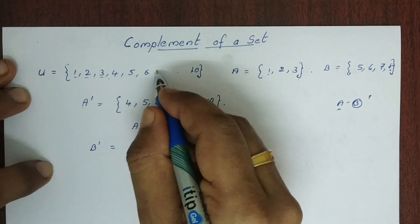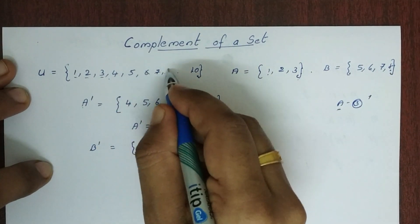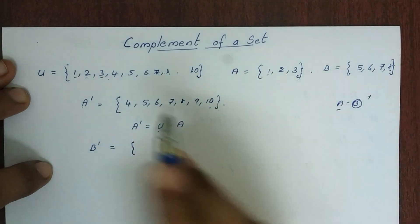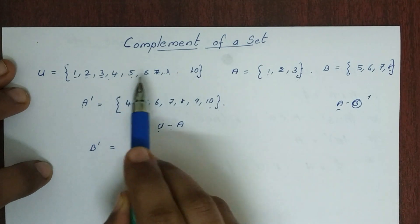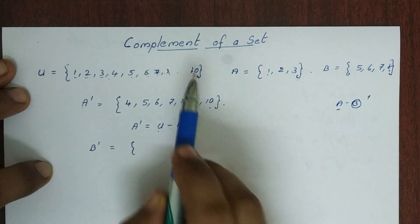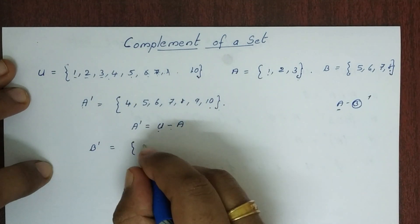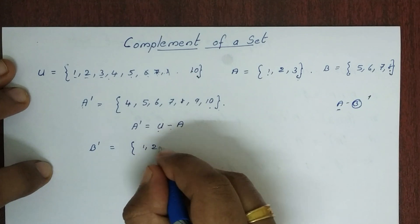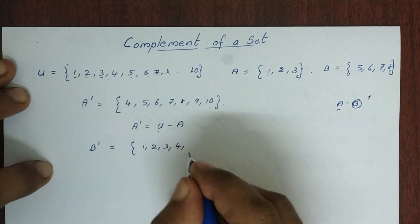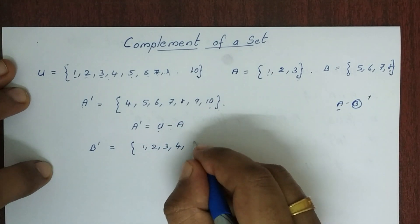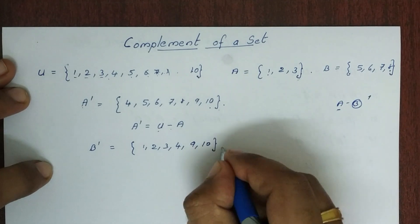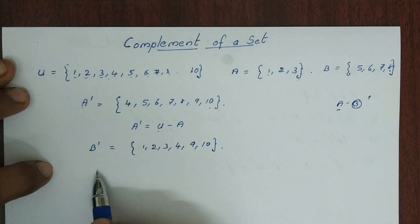The universal set is {1, 2, 3, 4, 5, 6, 7, 8, 9, 10}. So B complement is {1, 2, 3, 4, 9, 10} — the elements of U not in B. This is B complement.